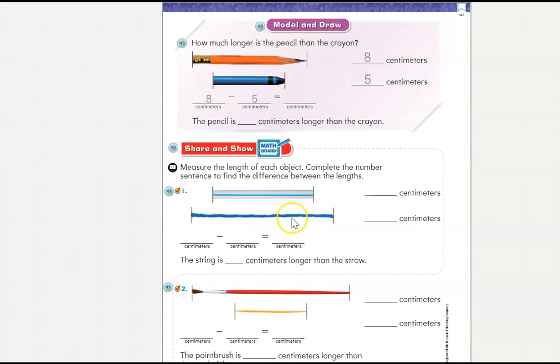Now if this string is longer than this straw and I'm writing them in a number sentence, which one do you think I should write down first? The straw measurement or the string measurement? I should definitely write down the string measurement because that's the longer measurement and that's going to be the larger number. Remember we talked about subtrahends, minuends, and the difference. So let's remember which one goes first.